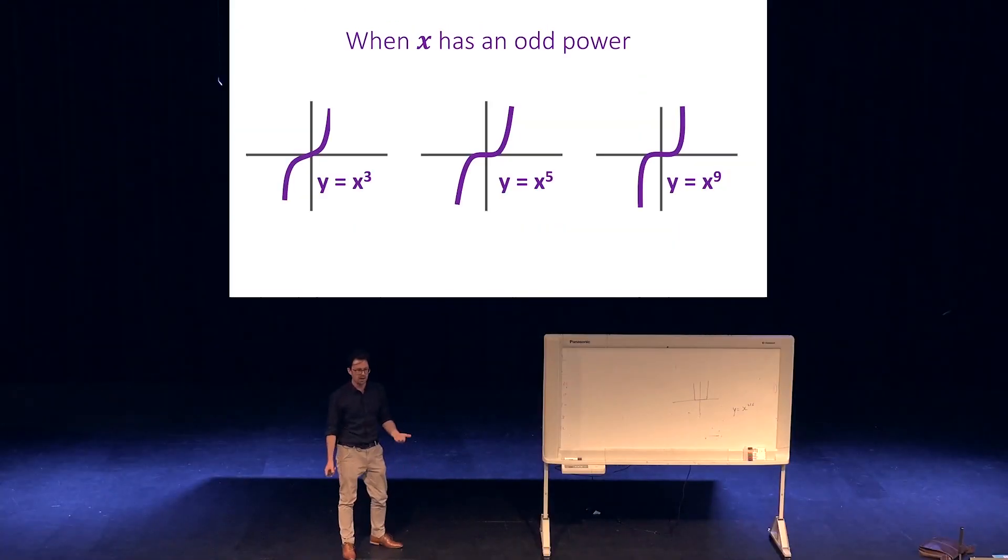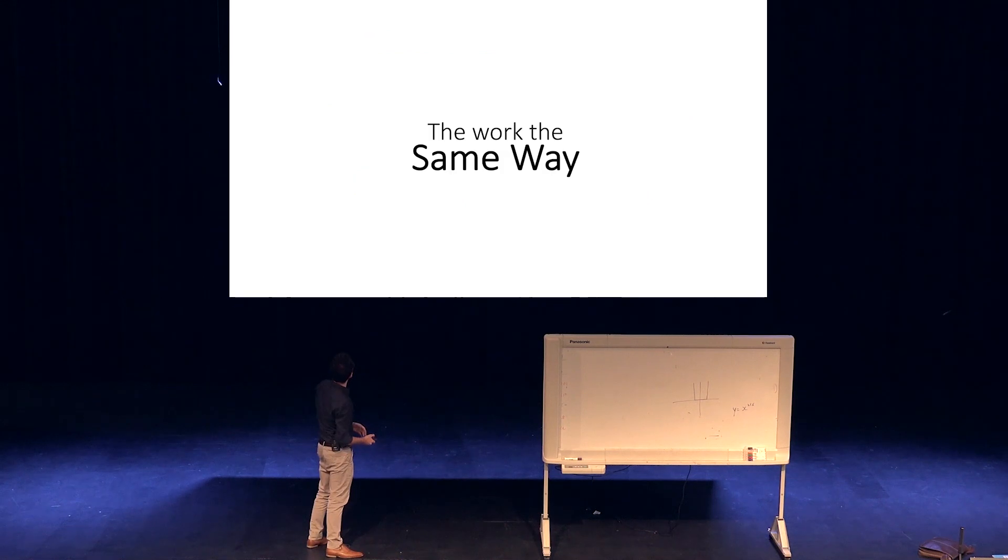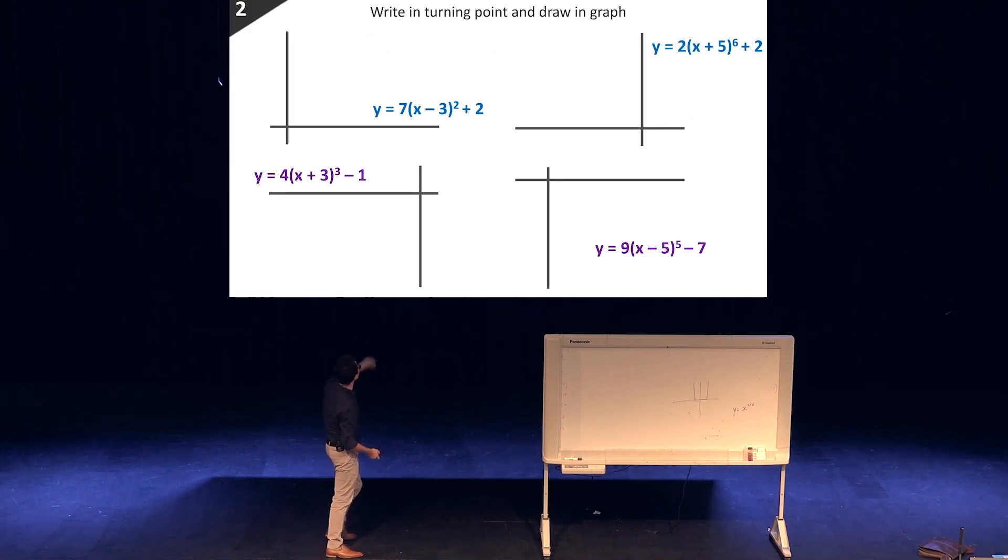So whenever you look at the powers, the power tells you the shape, and the way you sketch it is all the same, no matter what graph it is. If I was going to sketch them, very simple turning point, there's a (-3, 2), so that'd be (3, 2). Chuck that in. Check out the type of graph, there's a parabola, so I just draw that in, not worrying about the dilation too much.